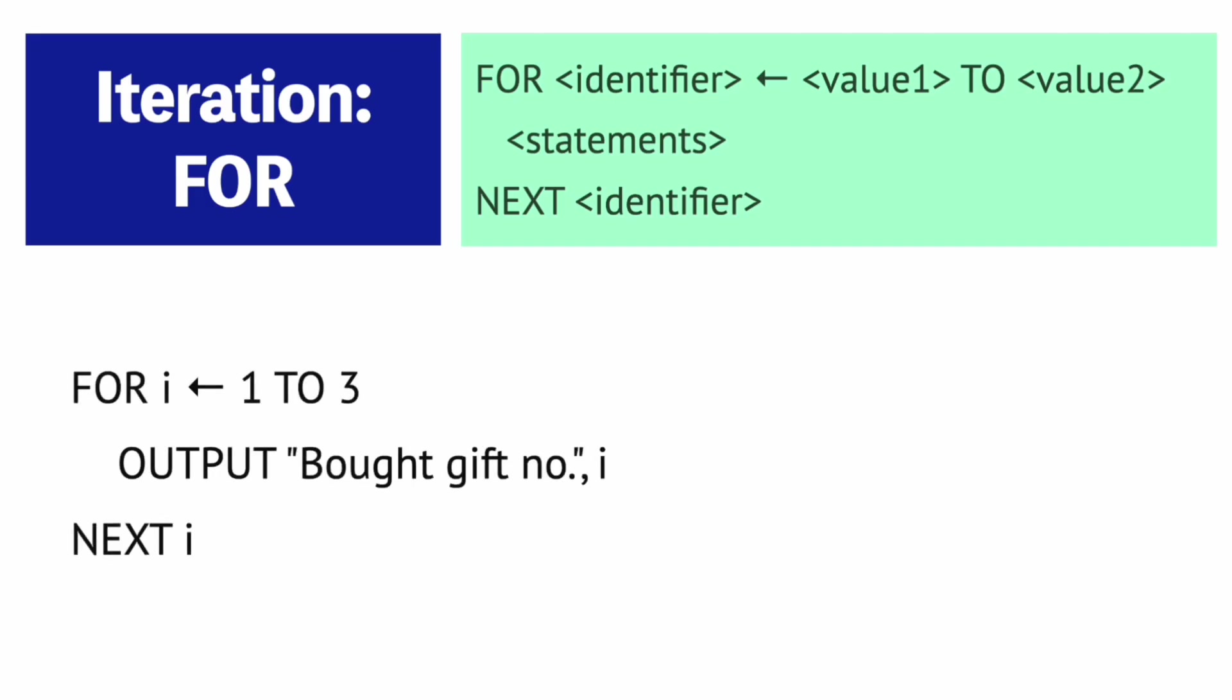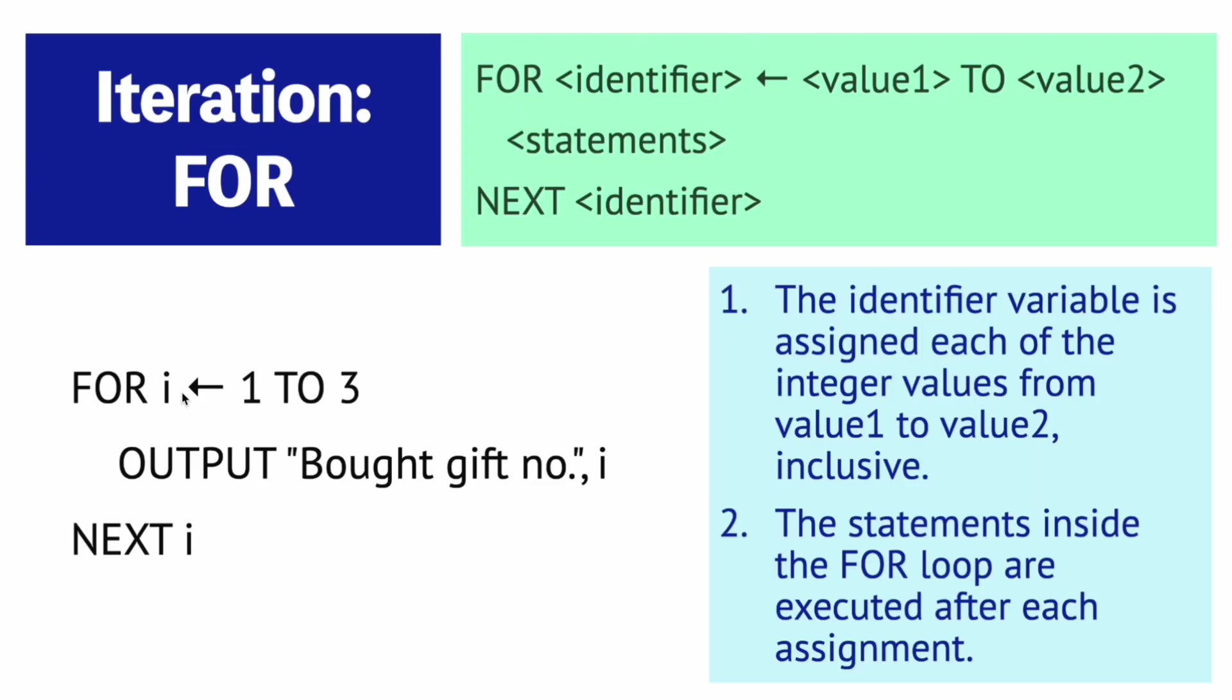In pseudocode, we use a FOR loop for a count control loop. Here's the structure for the FOR loop and an example of how it works. In this example, we are outputting this statement three times. What's happening is that the identifier variable is assigned each of these integer values from value 1 to value 2, one at a time. In this case, we set our FOR loop to have a lower bound of 1 and an upper bound of 3. Then the statements inside the FOR loop are executed after each assignment, meaning that i is assigned the number 1, then the statement is executed, and then we go on to the next i, which is 2. So i is assigned number 2, the statement is executed, we go on to the next i, which is 3. So i is assigned 3, the statement is executed, and that's it because this is the upper bound 3. We already hit the upper bound so we can just move on.